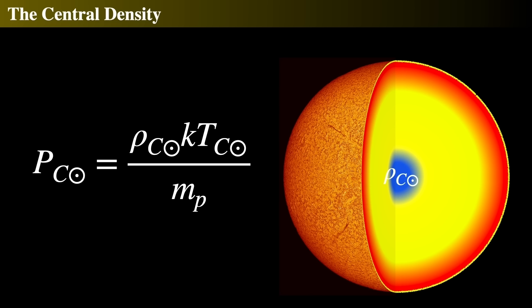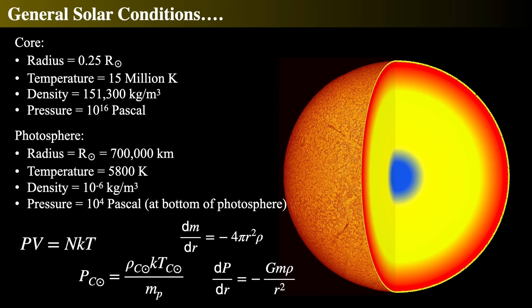The central density of the Sun is extraordinarily large. We can use these basic arguments about hydrostatic equilibrium and the ideal gas law to determine what the central density and central temperature must be. This was understood well before the invention of computers and computing algorithms. The core is about a quarter of the entire radius of the Sun; the temperature is about 15 million Kelvin; and the density, for more specific calculations, is about 151,300 kilograms per cubic meter — compared to the surface photosphere, which has a temperature of about 6,000 Kelvin and a much, much lower density.